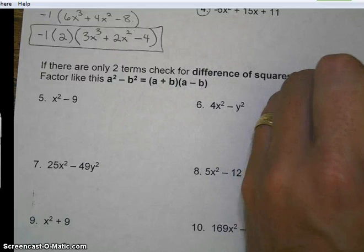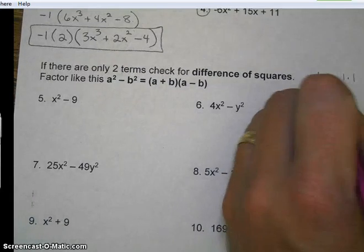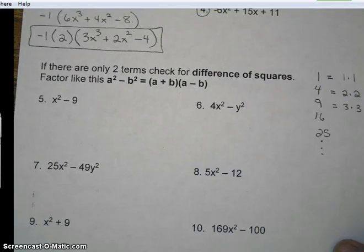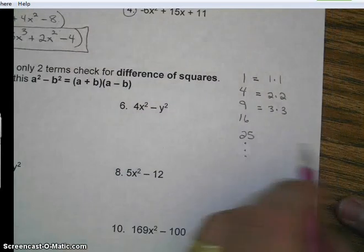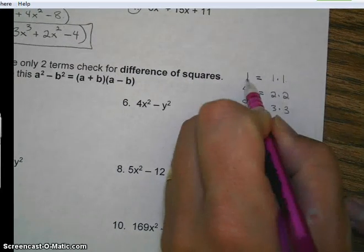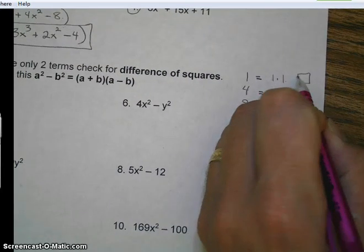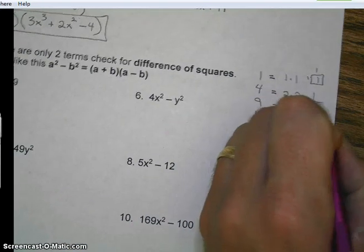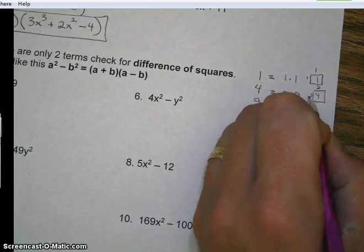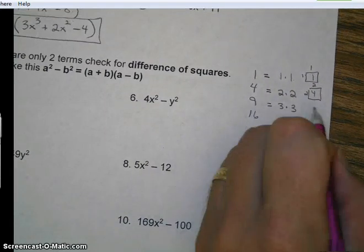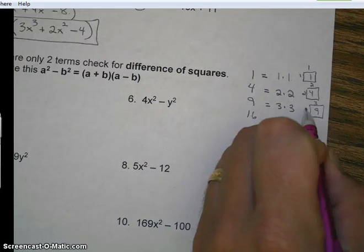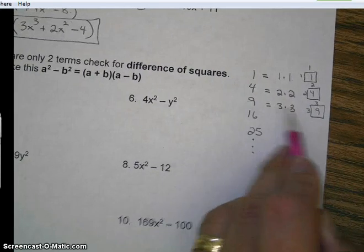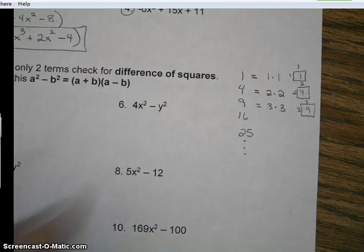Because one times one is one. Two times two is four. Three times three is nine and so on. And why do we call them squares? Because this represents the area of a one by one square. This represents the area of a two by two square. This represents the area of a three by three square. Remember squares all sides are the same. So this represents the area. These represents the sides and it makes a perfect square.